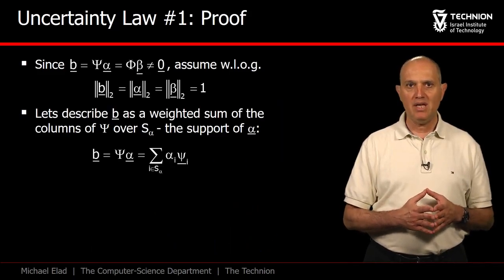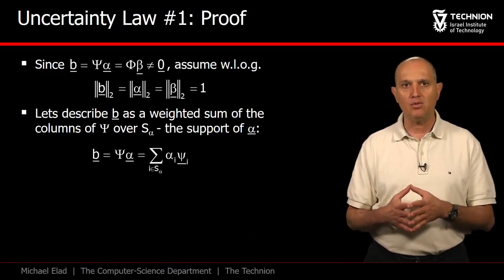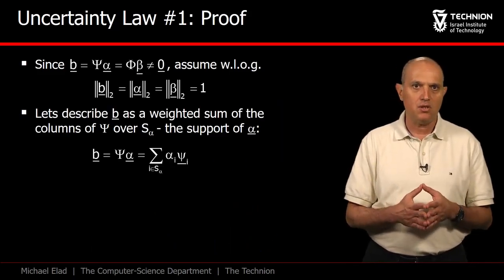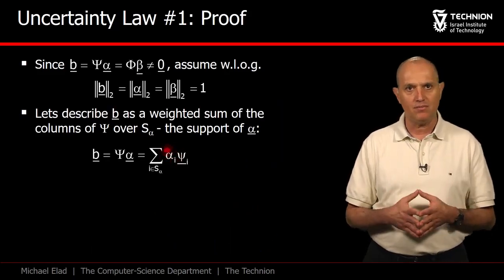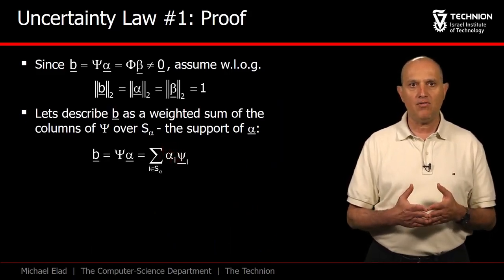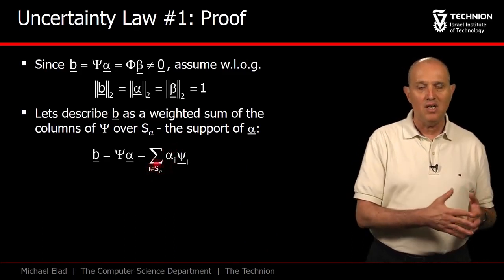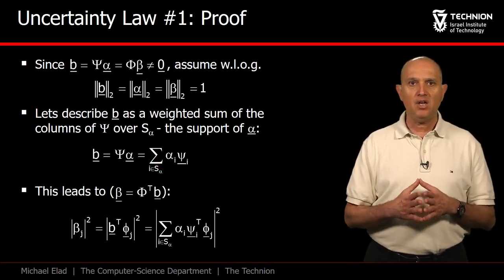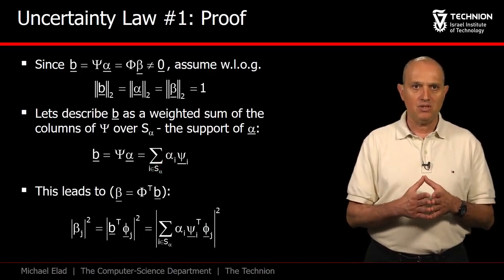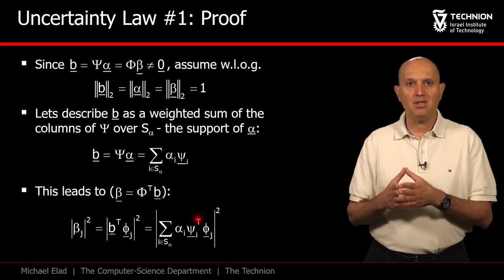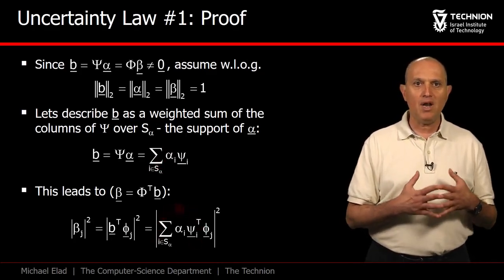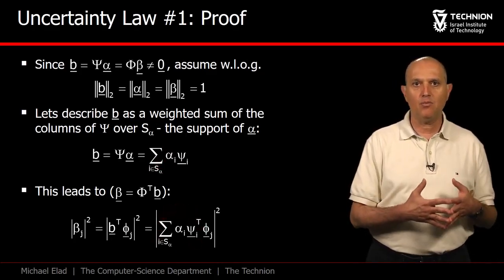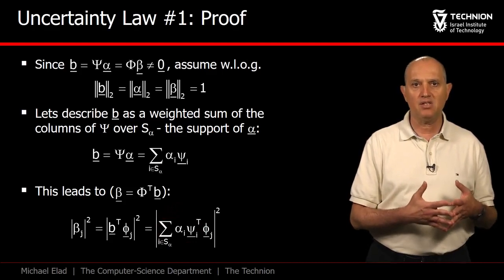We start by describing b as a weighted sum of the columns of Ψ, where the coefficients are the entries of the vector α. Assuming that the location of the non-zeros in α are denoted as the support Sα, the summation goes over the elements of this support. Taking an inner product between b, posed as this term, and an arbitrary column from Φ, we get one entry in the vector β. We square this term and get this expression.